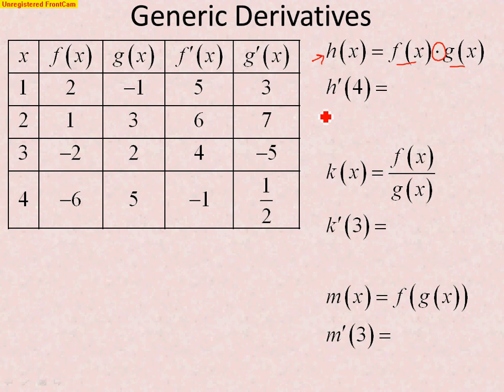So we're going to write down our product rule, but we're going to write it very generically, because we don't know what f and g are. So our product rule is the first times the derivative of the second, plus the second times the derivative of the first.